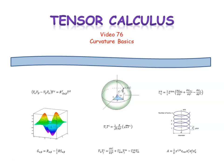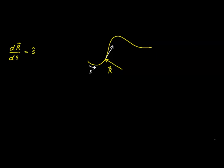This is video number 76 in our series on tensor calculus. In this video, we're going to explore the very basic geometric nature of the curvature of a line in space. Back in video number 8, we discovered this very basic relationship: if we take the derivative of our position vector with respect to the arc length, what we get is a unit vector, s-hat, that is always tangent to the curve at the point of evaluation. Today we're going to play off of this relationship and go a little bit deeper.